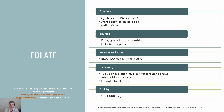Folate is a water-soluble vitamin, specifically B9. Folate is the form naturally found in foods, while folic acid is found in supplements and fortified items. Folate has many key functions in the body, including being involved in the synthesis of DNA and RNA, metabolism of amino acids, and being a part of cell division. Folate is found naturally in many foods, including dark green leafy vegetables, fruits, nuts, beans, peas, poultry, grains, and asparagus. The RDA for folate is 400 micrograms for adults.